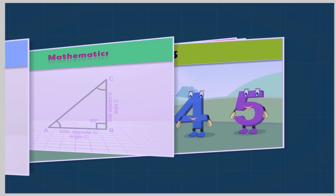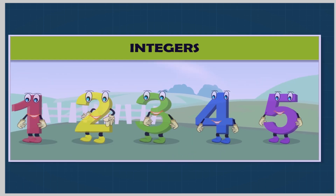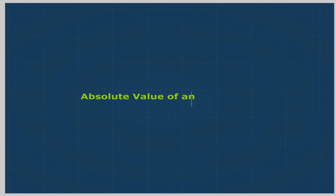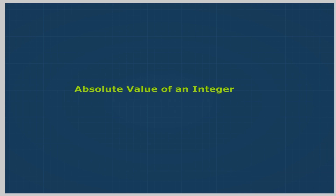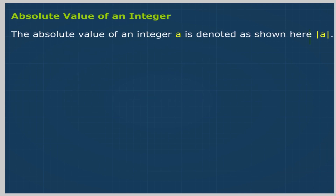Integers. Absolute value of an integer. The absolute value of an integer a is denoted as shown here — a is written between two vertical bars.